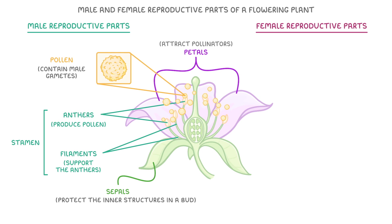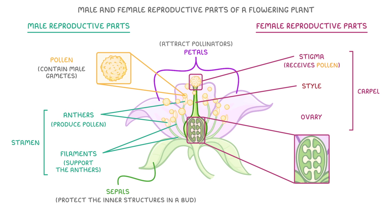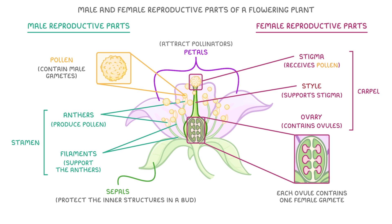In terms of female reproductive parts, these include the stigma, which sits above a style, and then just below the style there's an ovary. If we want to refer to all of these female parts together, we use the term carpel. The stigma is an often sticky structure that receives pollen grains, which contain the male gametes. The style is a stalk-like structure that supports the stigma, and pollen travels down through it to reach the ovary. Finally, the ovary of flowering plants contains ovules, and each ovule contains one female gamete — which can be called an ovum or egg cell.